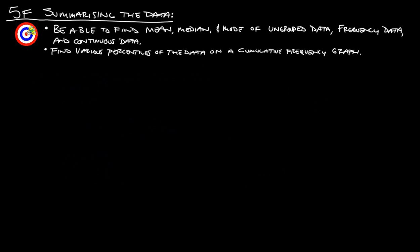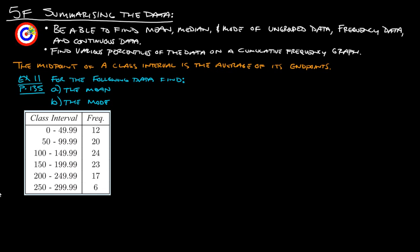Now let's take a look at class intervals. We're getting to our continuous data. If you have a class interval, that's continuous data. The one we just did was frequency data, and the first examples were ungrouped data — so we're hitting all three. The midpoint of a class interval is the average of its endpoints; basically you're just taking the middle of the interval.